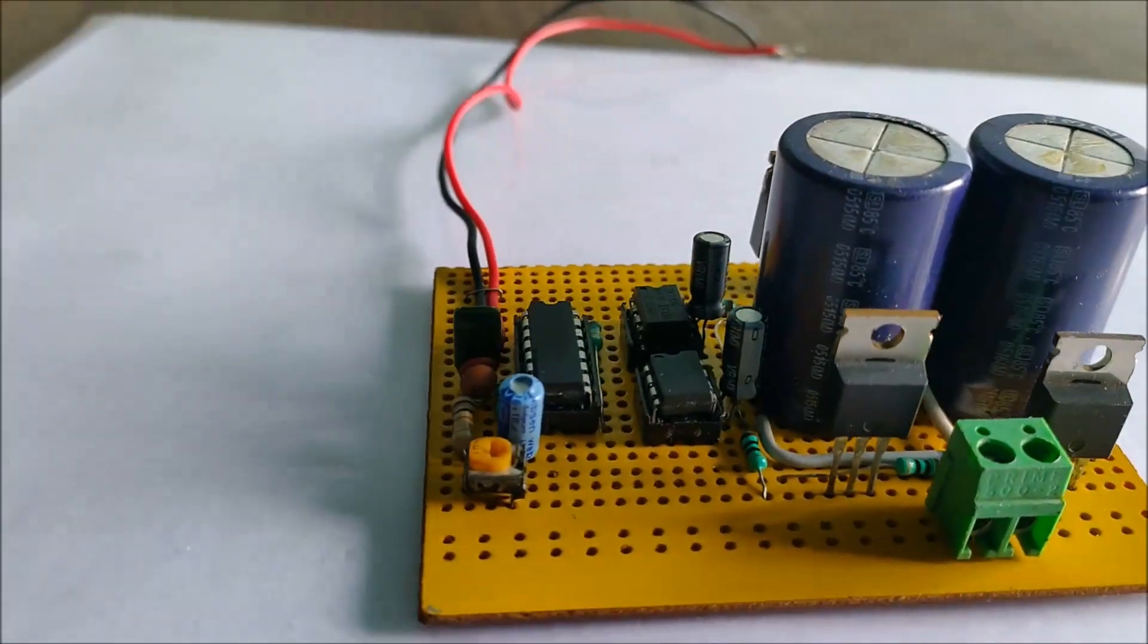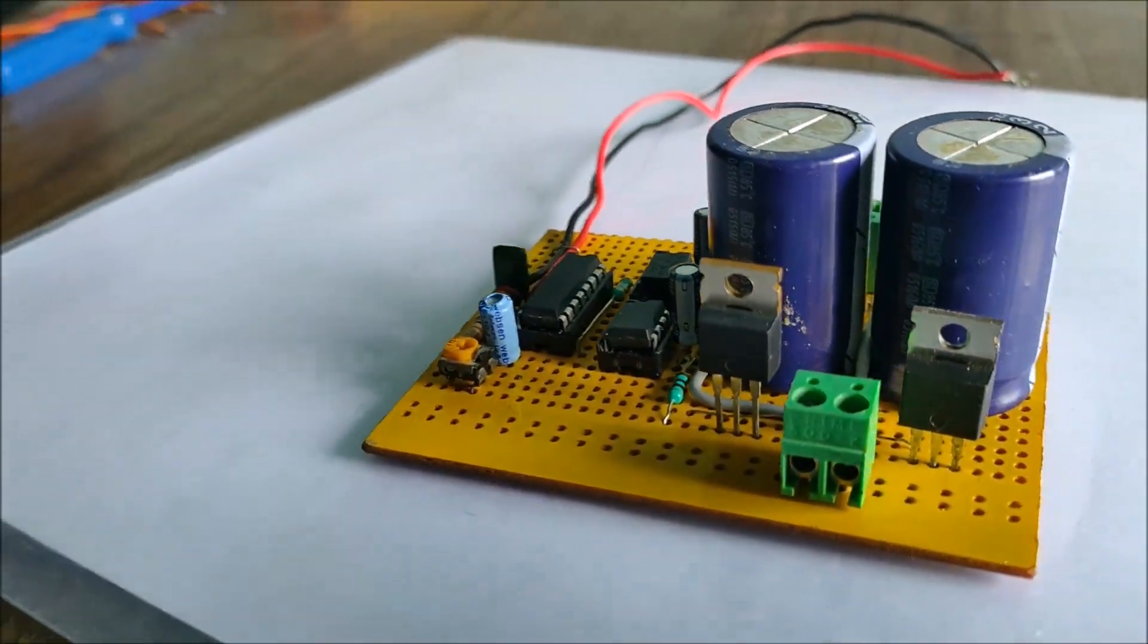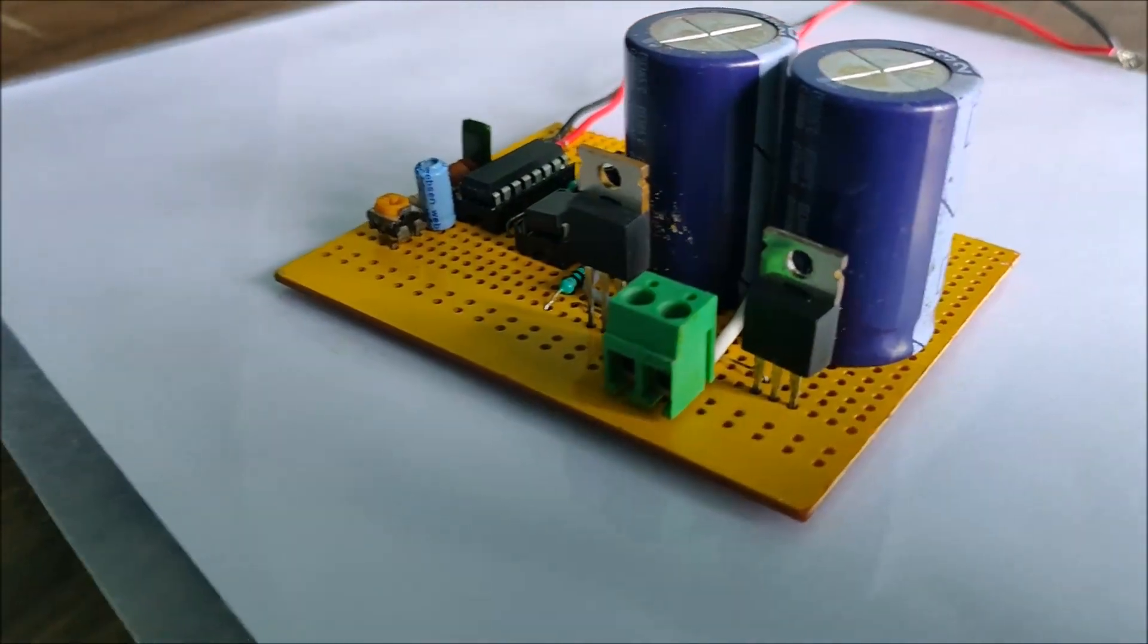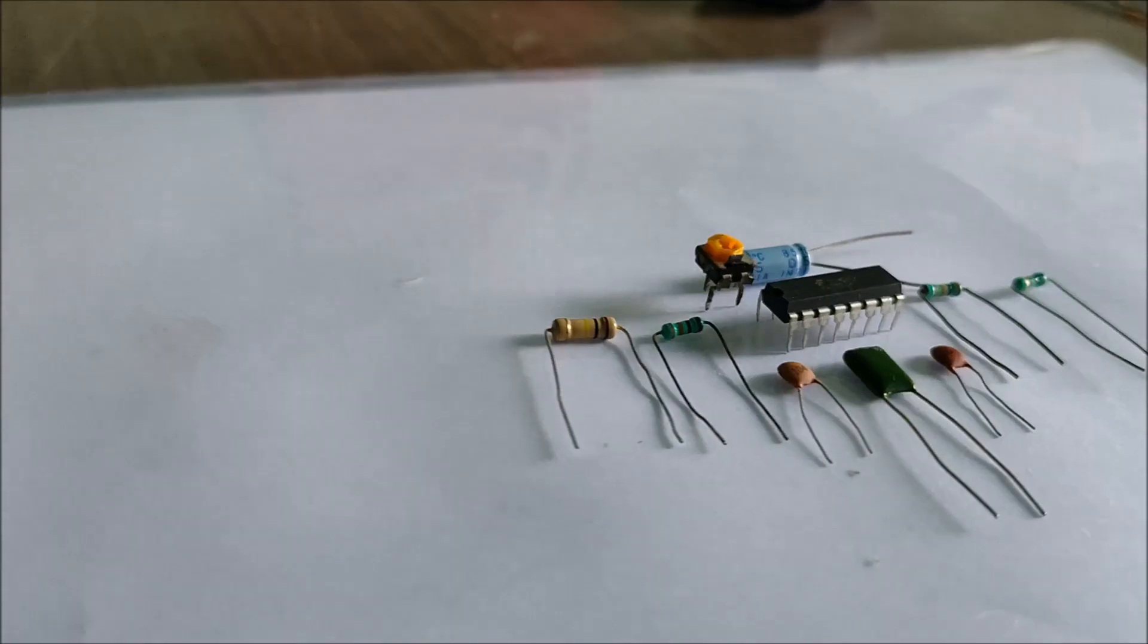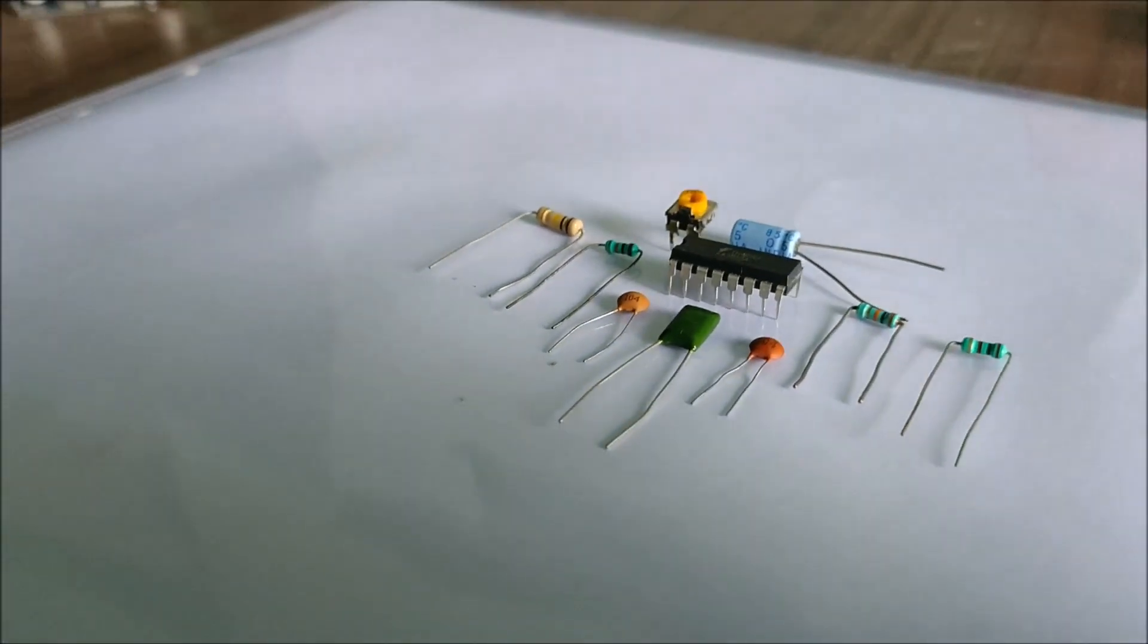What is good everyone. Welcome to the second part of my inverter series where I convert 220V DC to 50Hz 220V AC signal. I have used very simple components like the SG3525 along with some passive components.